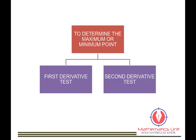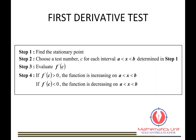To determine the maximum or minimum point, we have two methods: the first derivative test or the second derivative test. For the first derivative test, there are four steps. First, find the stationary point by setting dy/dx equals zero. Second, choose a test number within the interval determined in step one. Third, evaluate f prime at c. For the conclusion: if f prime c is greater than zero, the function is increasing on that interval.